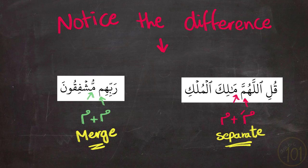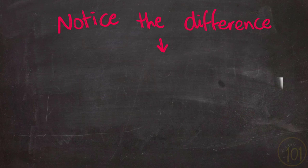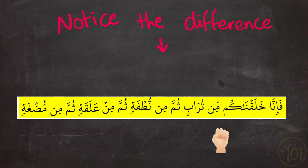Here is a final example that shows the difference in one single ayah. فَإِنَّا خَلَقْنَاكُمْ مِن تُرَابٍ ثُمَّ مِن نُطْفَةٍ ثُمَّ مِنْ عَلَقَةٍ ثُمَّ مِن مُضْغَةٍ.